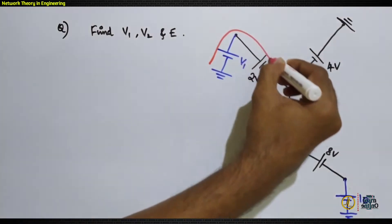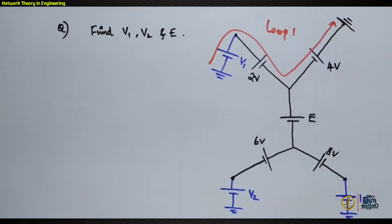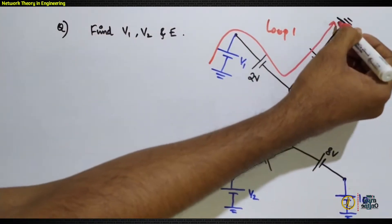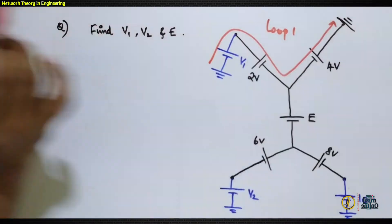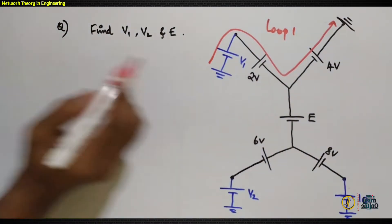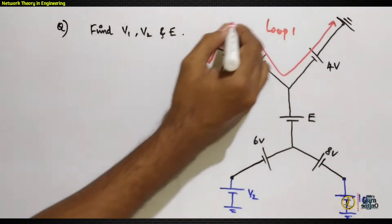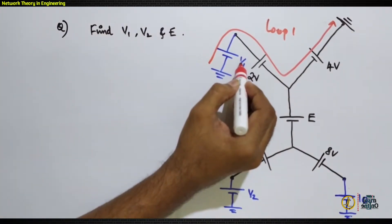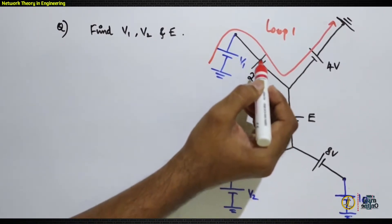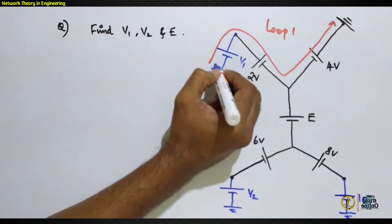For Loop 1, consider the loop starting from this ground and ending at this ground. Since every ground in the circuit connects to a common point, this is a closed loop. In that loop, there is only one unknown voltage — v1 — and the other voltages are 2V and 4V.